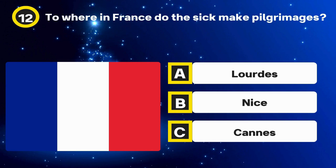Question 29. Taken literally, what should you see in a hippodrome? Options: Horses, Hippos, Birds. The answer: Horses.